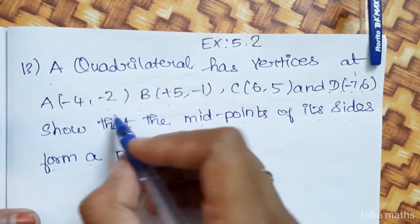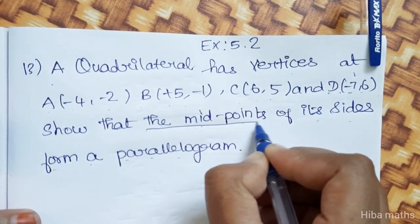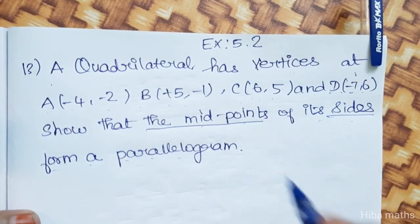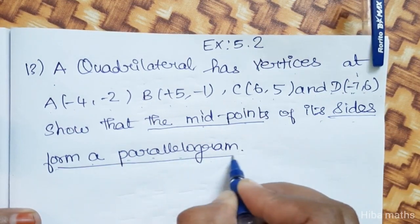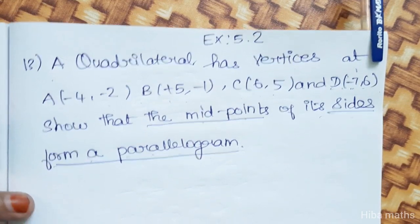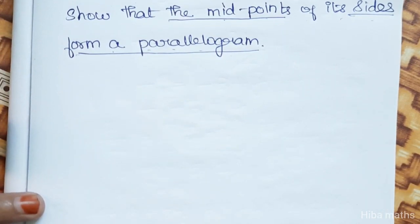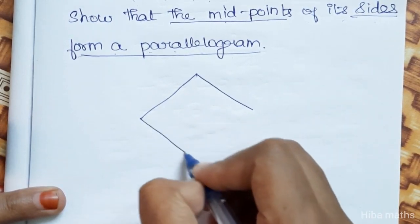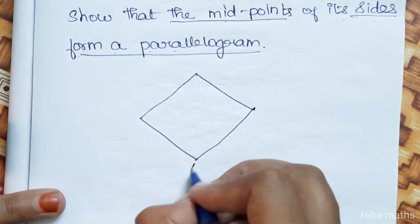So we have 4 points. We need to show that the midpoints of its sides form a parallelogram. If you join the midpoints in the diagram, you get a parallelogram. There are 4 sides of the quadrilateral: A, B, C and D.